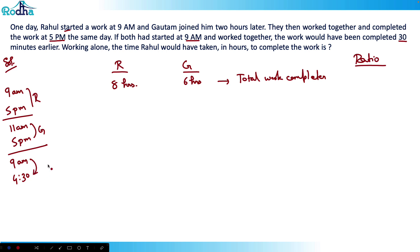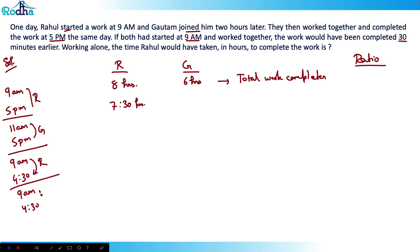In the second case, Rahul works from 9am to 4:30pm — that is seven hours thirty minutes. And since both started at 9am, Gotham also works from 9am to 4:30pm — so Gotham also works for seven hours thirty minutes. The total work again gets completed.